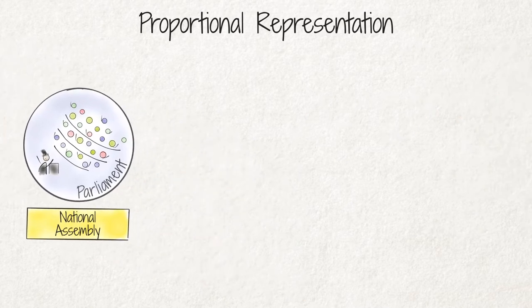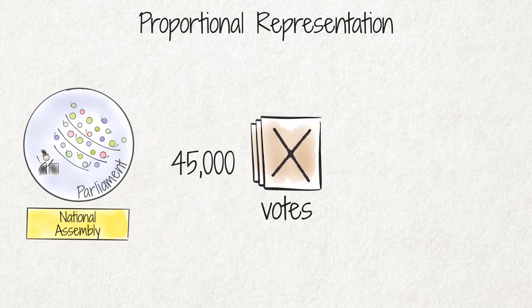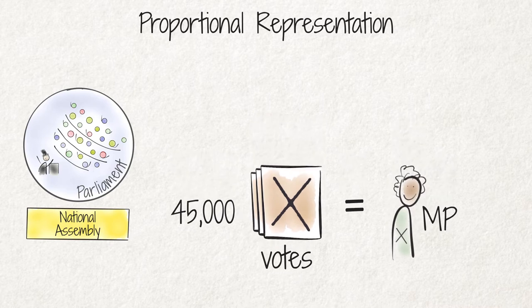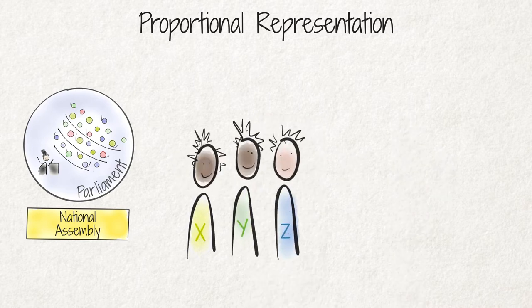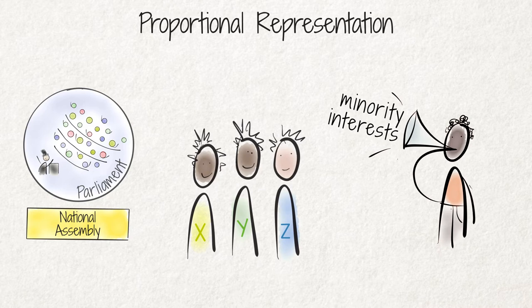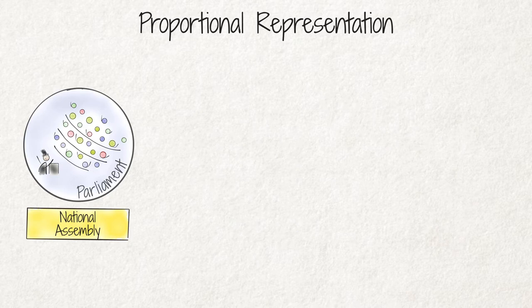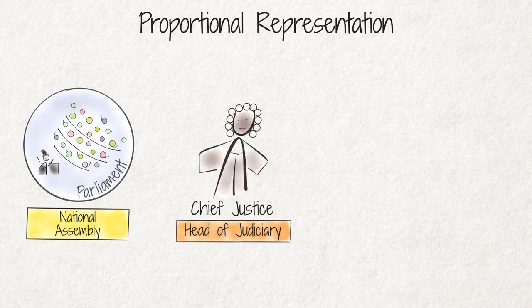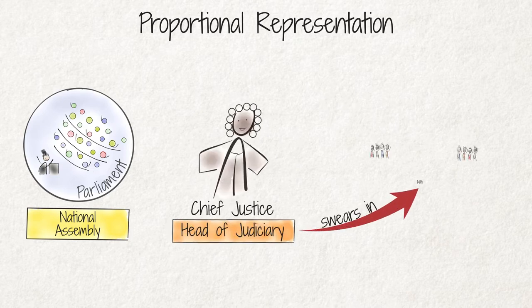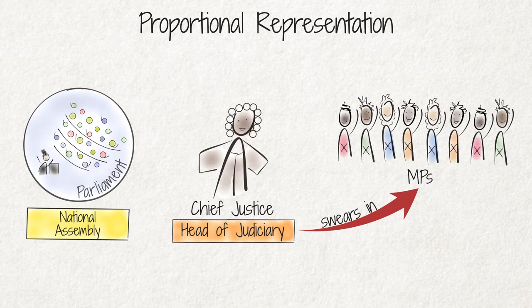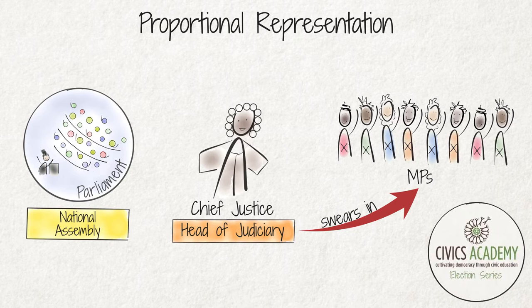A party needs to obtain about 45,000 votes for every MP representing it in the National Assembly. This system allows for smaller parties and therefore minority interests to be represented in our legislature. Soon after the national election, the Chief Justice, who is the head of the judiciary, swears in the members of the National Assembly. We explain the role and functions of MPs and political parties, as well as different aspects of elections, in the Civics Academy election series.